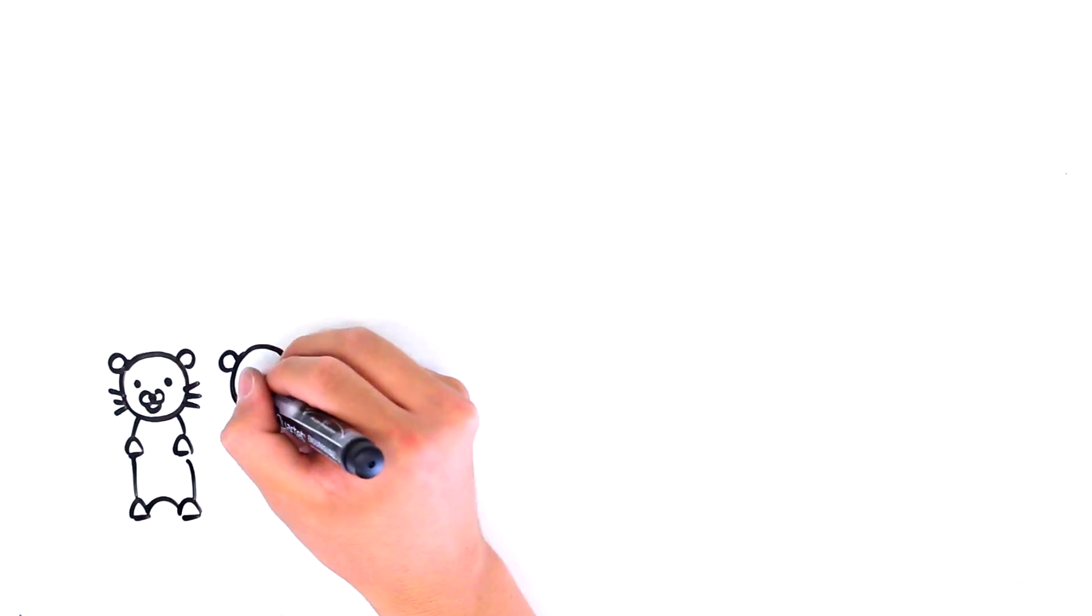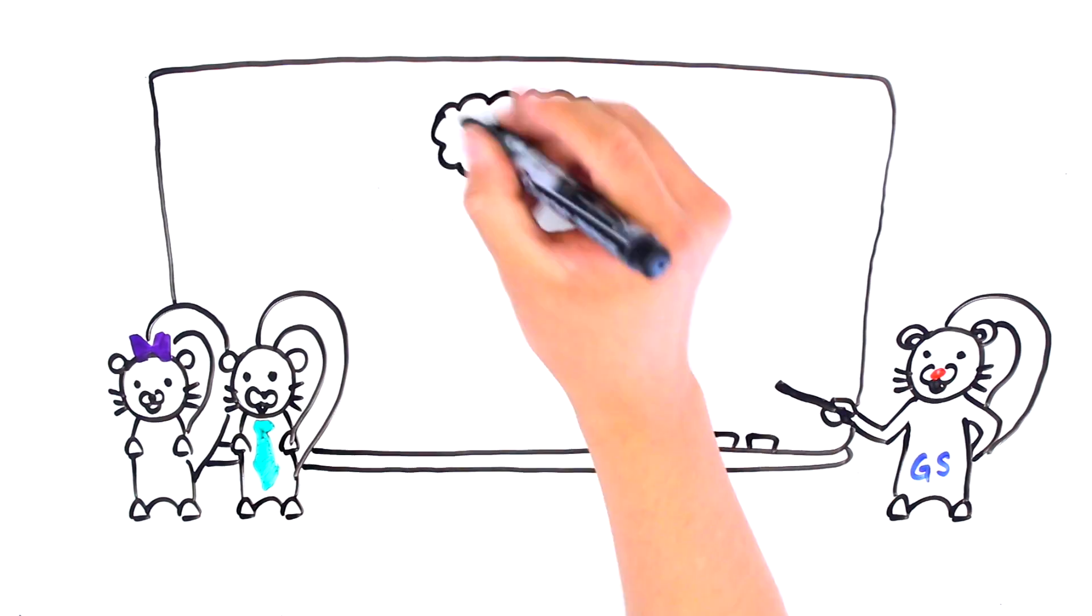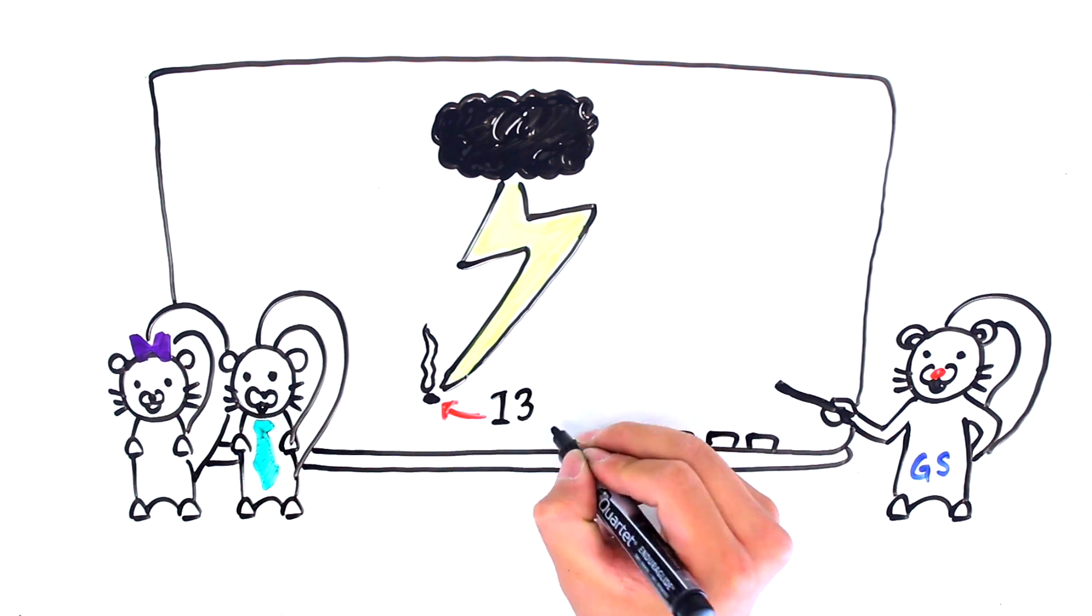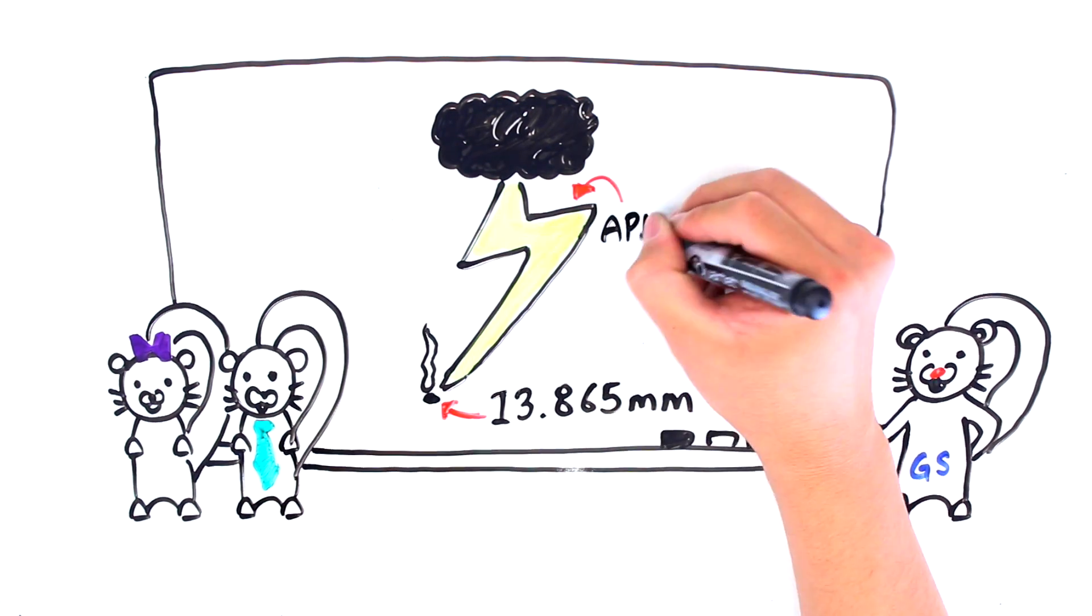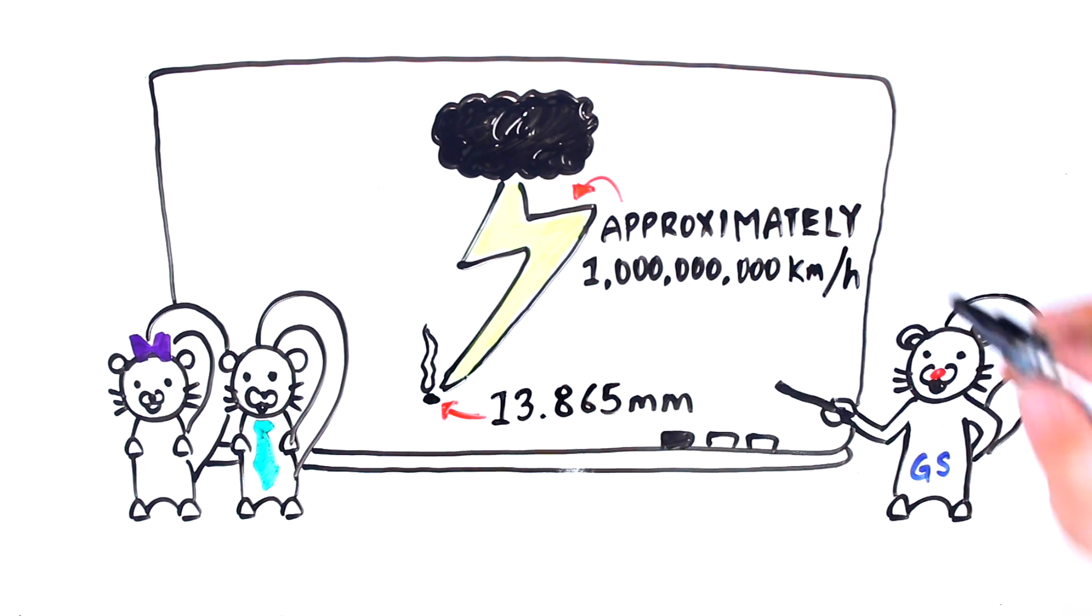A few days later, the squirrels are back in the classroom, giving their peers a presentation of what they discovered on their recent field trip. During the course of their presentation, Grammar Squirrel mentions the mean width of scorch marks that the team calculated, as well as general information about thunderstorms that they found from the literature, such as the speed at which lightning bolts travel.